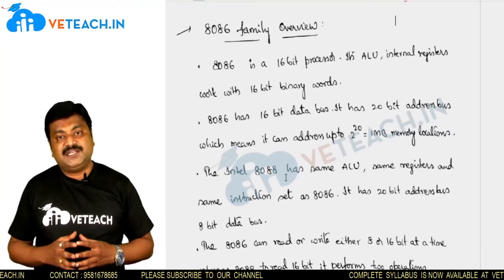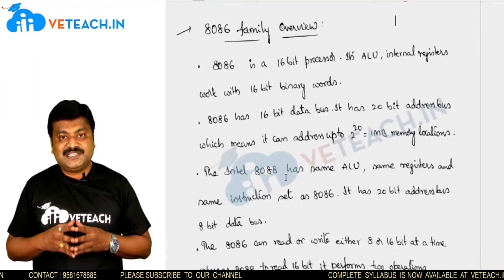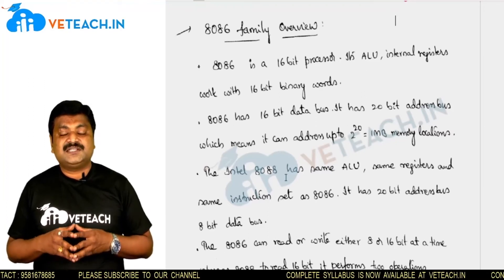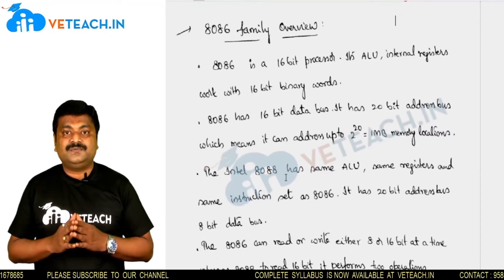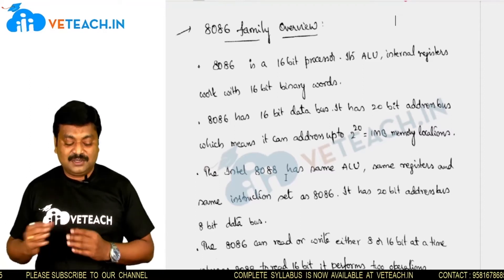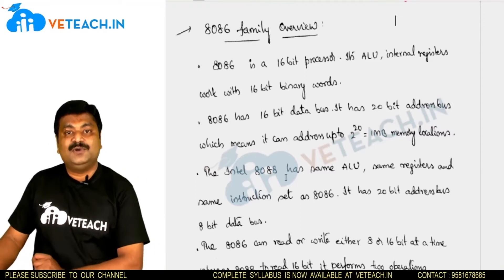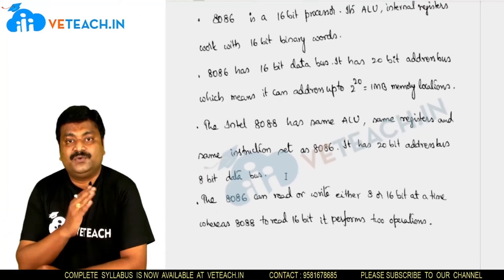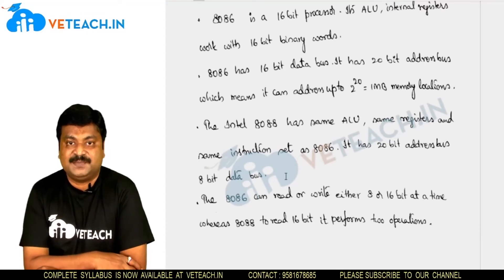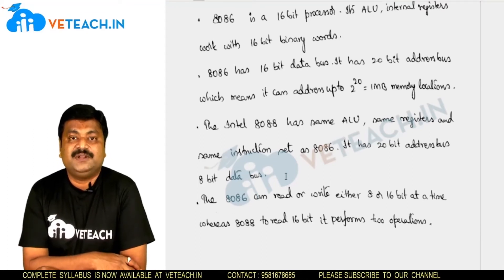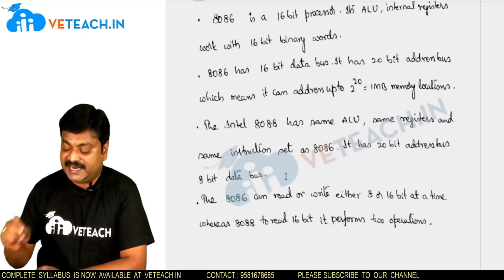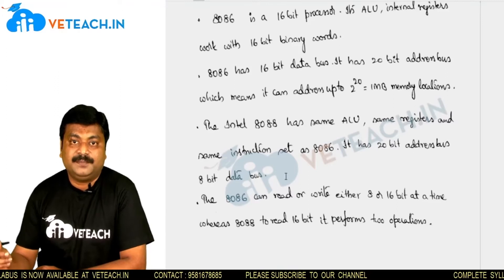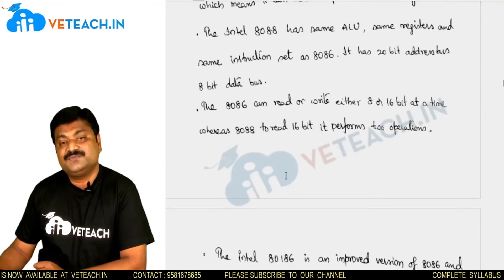The 8086 is a 16-bit processor where the internal registers and the arithmetic logic unit are of 16-bit size, capable of holding 16 bits of data. It has a 20-bit address bus, which means it can access 2 to the power of 20 memory locations — that is, 1 megabyte of memory locations.